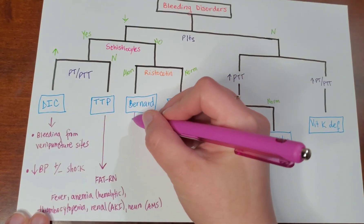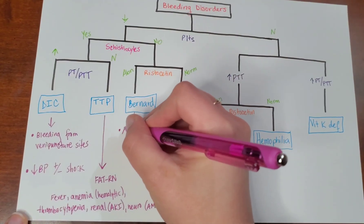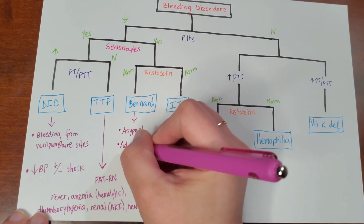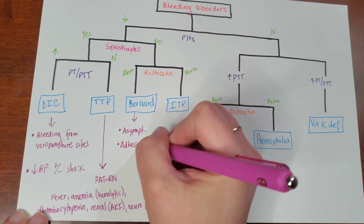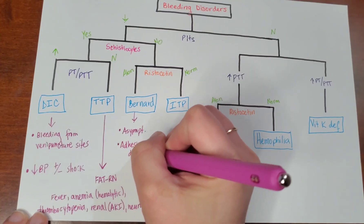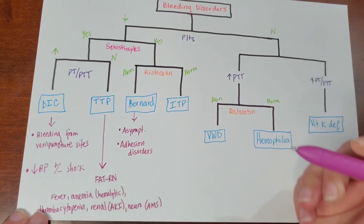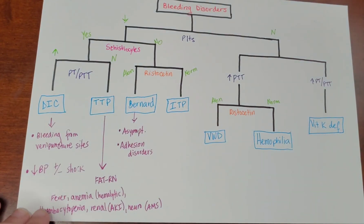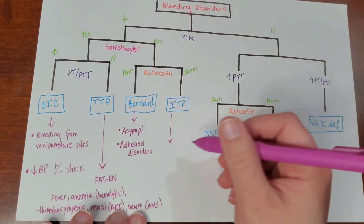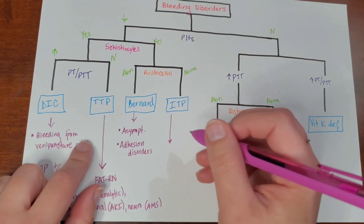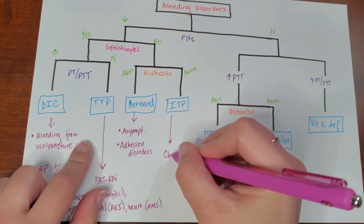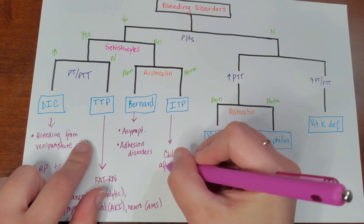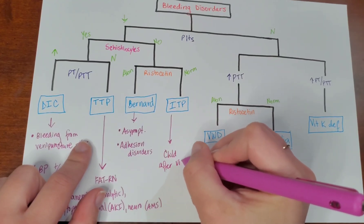Bernard-Soulier is usually asymptomatic, but it is an adhesion disorder affecting the platelets. If you remember this, you'll remember that the ristocetin test will be abnormal. For ITP, you'll often see that they describe a child after having a viral illness.